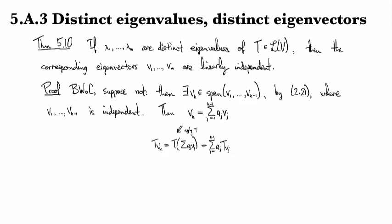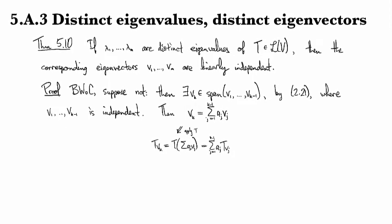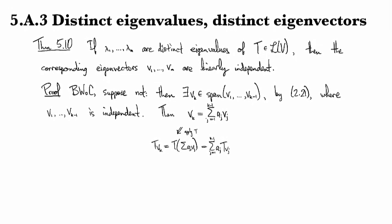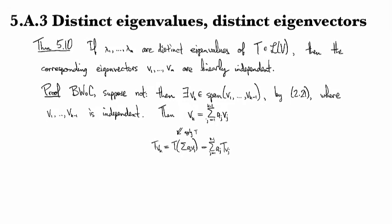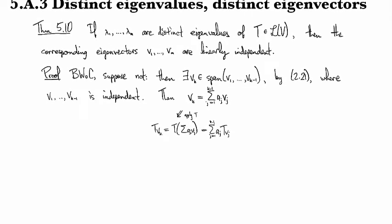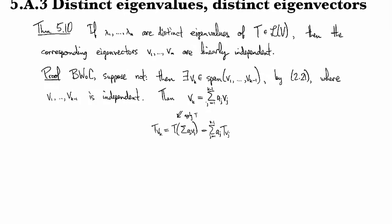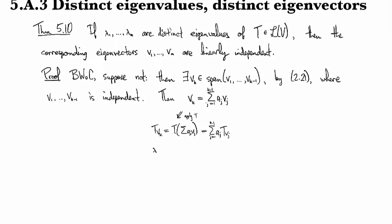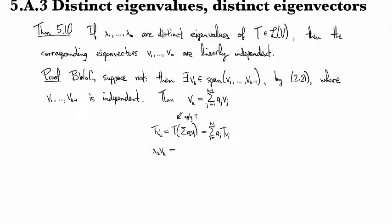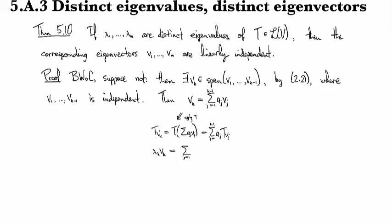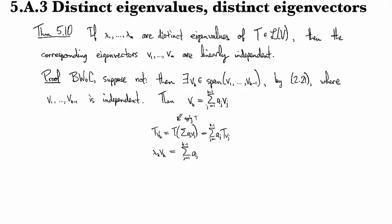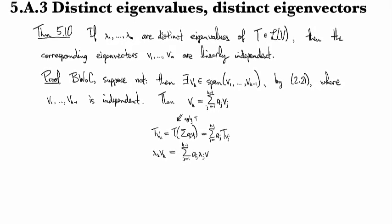On the other hand, I can do something a little bit more with that because I know that these are all eigenvectors. So we get lambda_k v_k on the left, and then on the right we have sum j equals 1 to k minus 1 a_j, and then I'm going to replace T(v_j) with lambda_j v_j.